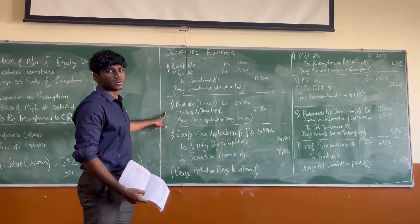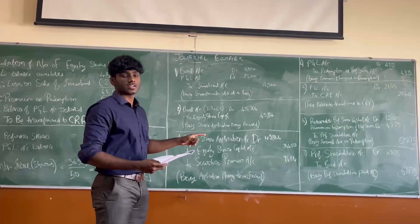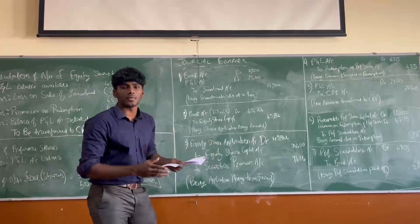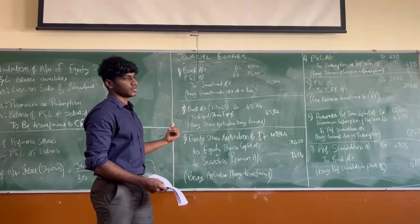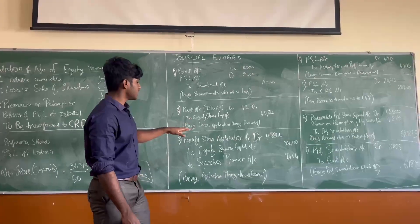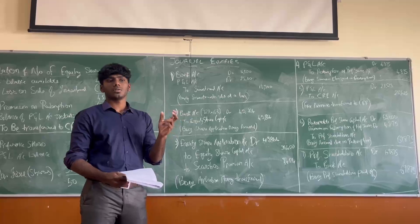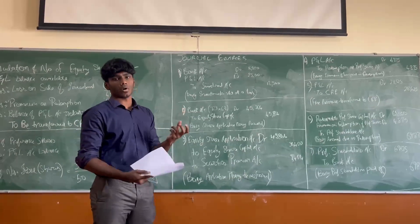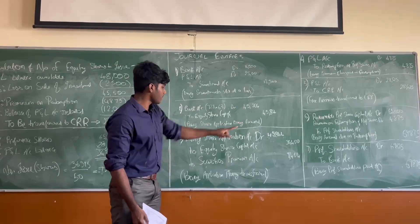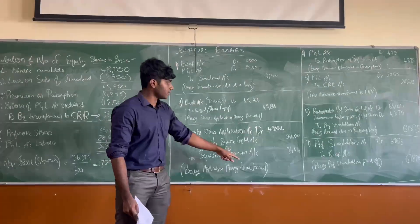Journal entries 2 and 3 concern the issue of fresh equity shares. Since we had 728 equity shares to be issued, the bank received 45,864 including the premium of 30 per share. Entry 2: Bank account debited to Share Application account. Entry 3 is the transfer entry — Share Application account is debited 45,864, to Equity Share Capital for only the face value at 50 per share totaling 36,400, and to Securities Premium account for the premium amount.